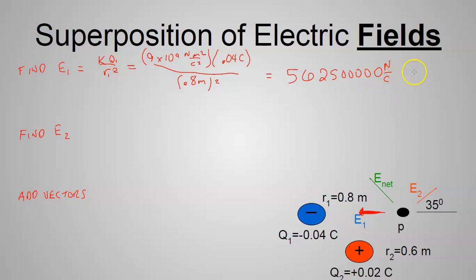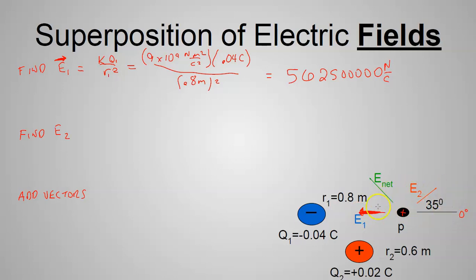F = qE — you can work this both ways: give me the force and I'll tell you the field; give me the field and I'll tell you the force once you specify the charge. For the direction: a positive charge at point P is attracted to the left, which is 180° measured counterclockwise from zero. So E₁ = 5.625×10⁵ N/C at 180°.